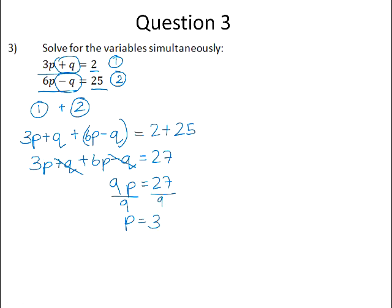We still need to solve for q, so we can substitute that into either equation 1 or equation 2. I'm going to substitute it into equation 1. So we will have 3 times 3 plus q is equal to 2. 3 times 3 is 9, so if we minus 9 from both sides, we get q to be negative 7.